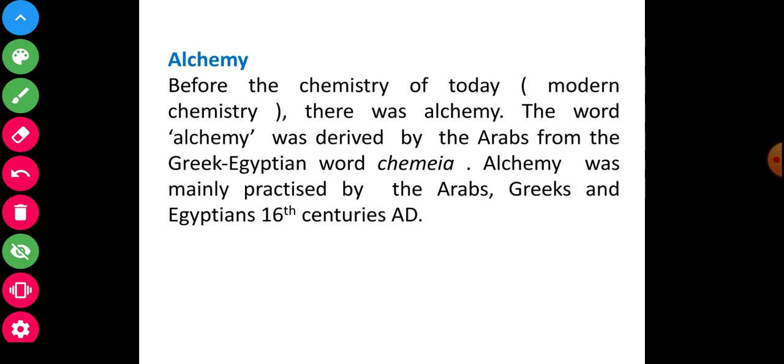Alchemy had the following two aims. First aim: converting cheaper metals into gold. Second: searching for elixir of life. Elixir means an imaginary liquid that would cure all diseases and help a person live long. First of all, we will discuss point by point.